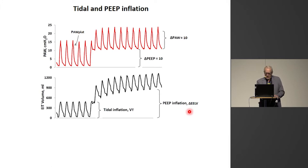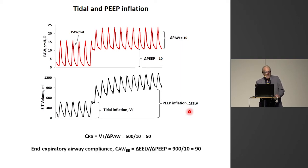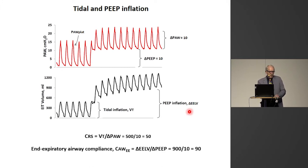So we have two ways of measuring compliance. We can do it the usual way — tidal volume divided by the airway driving pressure — giving a compliance of 50 in this case. But we could also divide the delta EELV by the delta PEEP and we get a compliance of 90. That is almost twice as high.